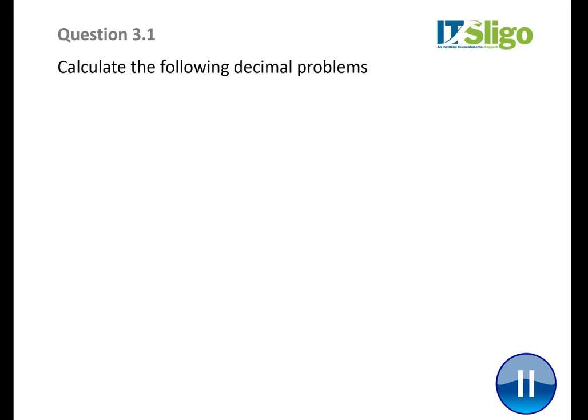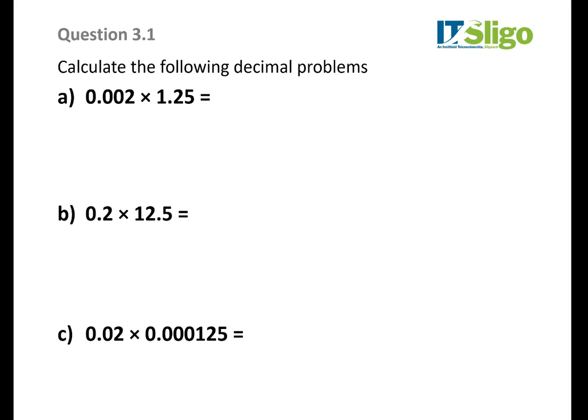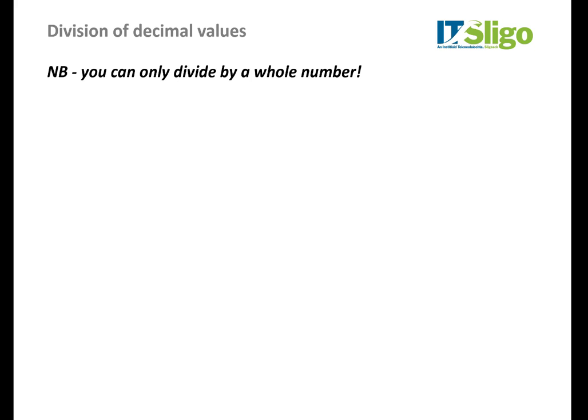Here's one of your questions — calculate the following decimal problem. Pause the video, calculate neatly, and record your answer somewhere you can retrieve it quickly. It's the same numbers being multiplied together — you're going to be multiplying 2 by 125, that's 250. The question is where does the decimal point lie? The answer is 3.1.